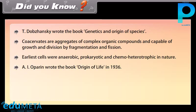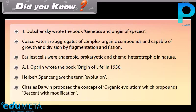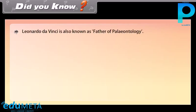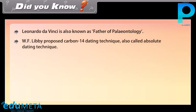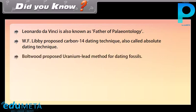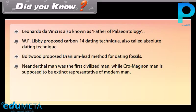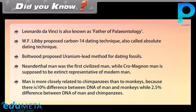A.I. Oparin wrote the book Origin of Life in 1936. Herbert Spencer gave the term 'evolution'. Charles Darwin proposed the concept of organic evolution, which propounds descent with modification. Leonardo da Vinci is also known as the father of paleontology. W.F. Libby proposed the carbon-14 dating technique, also called the absolute dating technique. Boltwood proposed the uranium-lead method for dating fossils. Neanderthal man was the first civilized man, while Cro-Magnon man is supposed to be an extinct representative of modern man. Man is more closely related to chimpanzees than to monkeys, because there is a 10% difference between the DNA of man and monkeys, while only a 2.5% difference between the DNA of man and chimpanzees.